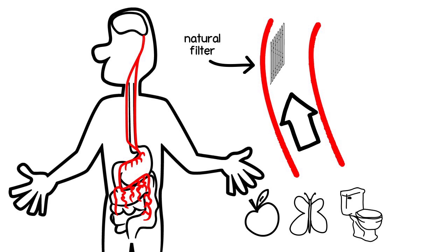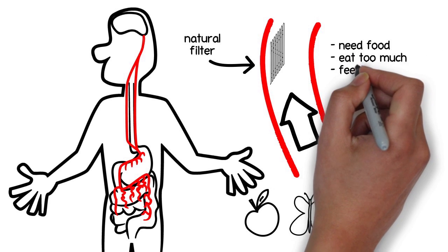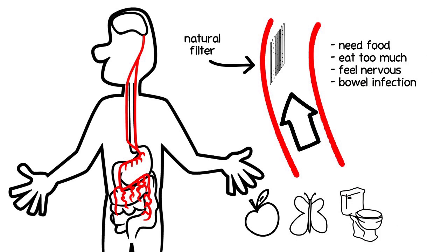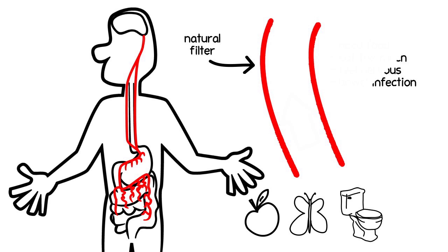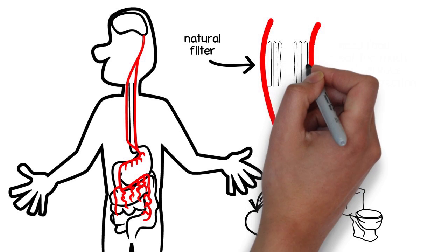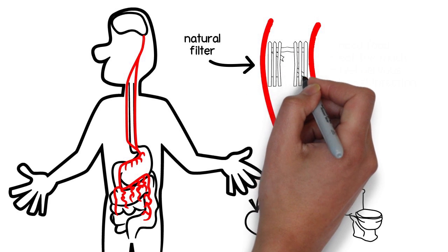This normally occurs when we need food or eat too much, feel nervous, or contract a bowel infection. In functional dyspepsia and irritable bowel syndrome, there is evidence that the symptoms are due to a malfunction of the filtering mechanism.